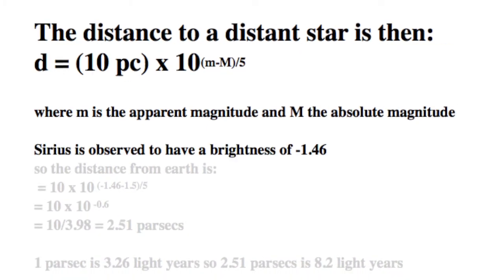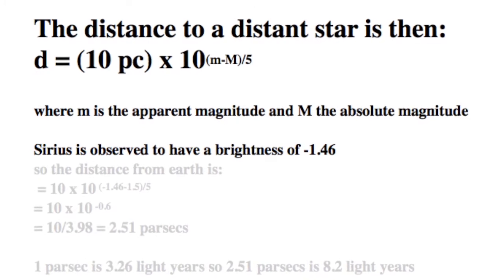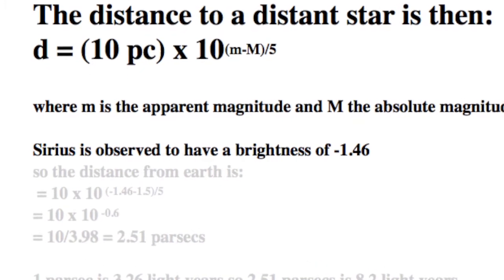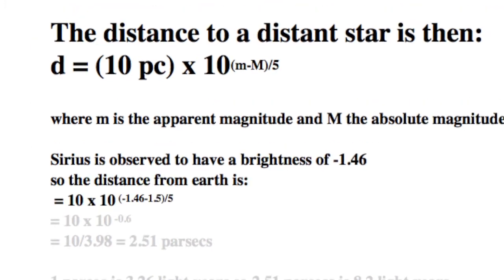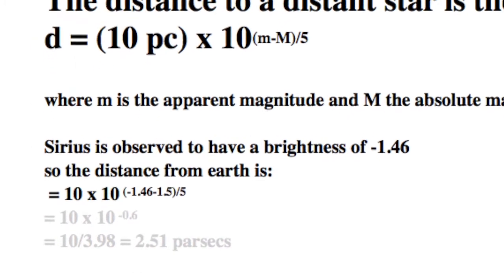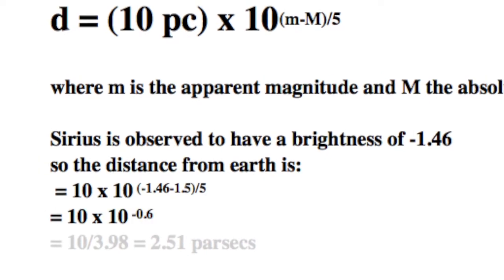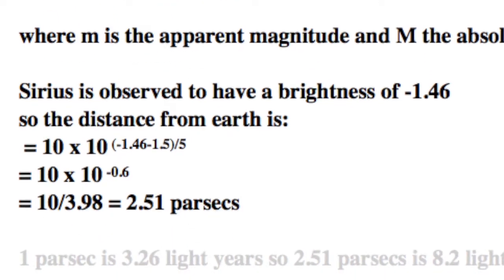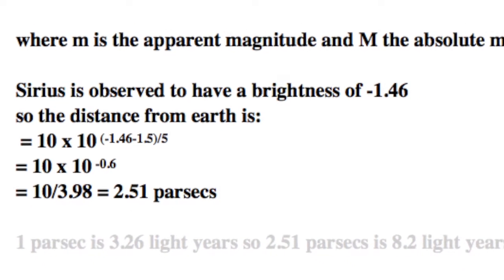Sirius is the brightest star in the sky and is observed to have an apparent magnitude of minus 1.46. Substituting for those values of magnitude and then doing the follow-up arithmetic, we have 10 times 10 to the minus 0.6. That comes at 2.51 parsecs.